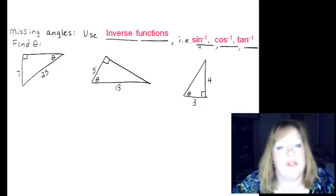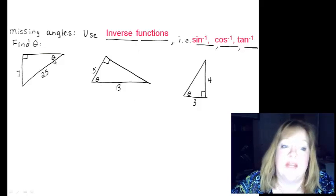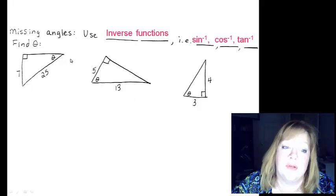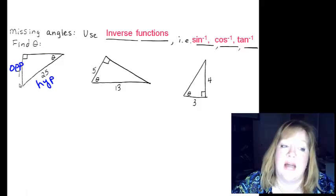So we start the same way. Let's label the sides we're given. And in order to find the angle using these inverse functions, you need two sides. So we're going to label them. Here's my angle theta. We're trying to find the angle theta. So if I look here, the hypotenuse, that's twenty five. The seven, it's across the way from the theta, so that's the opposite side.